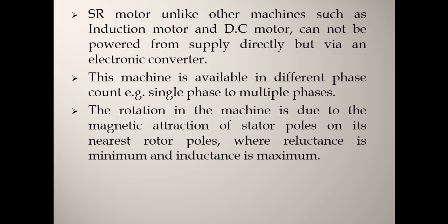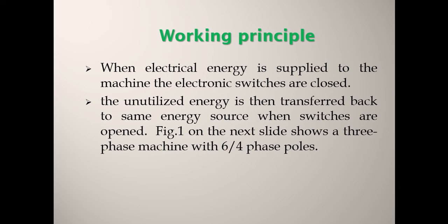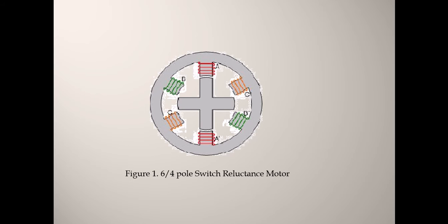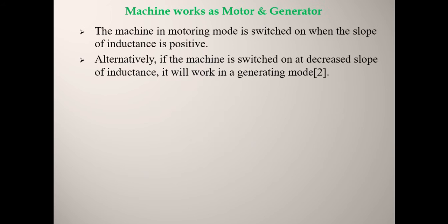When inductance is maximum, electrical energy is supplied to the machine, the electronic switches are closed, and the unutilized energy is then transferred back to the same energy source when the switches are open. This is explained in figure number one, where we have shown a three-phase machine — a six-by-four machine, meaning it has six poles on the stator and four poles on the rotor, making it a three-phase machine.